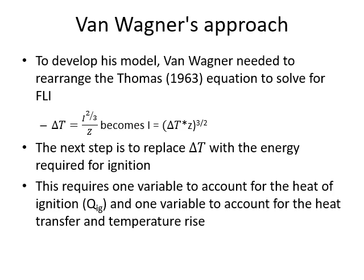Van Wagner first rearranges the Thomas equation to get intensity on its own: intensity equals the change in temperature times height, raised to three-halves. This allows us to start thinking about how to predict a critical intensity where ignition would occur. That change in temperature is the gas temperature, but we really need to figure out how much we're heating the needles at a given height above the fire line, accounting for heat of ignition and rate of heat transfer.